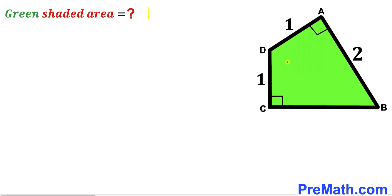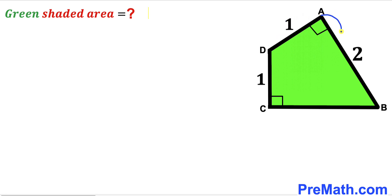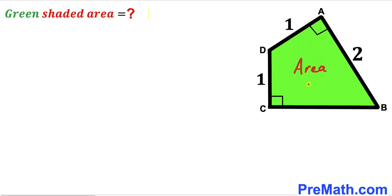Welcome to pre-math. In this video we have got this green shaded quadrilateral ABCD, such that side length CD is one unit, side length AD is one unit as well, and side AB is two units. Furthermore, this angle and this angle are 90 degrees each, and our task is to calculate the area of this green shaded quadrilateral ABCD.